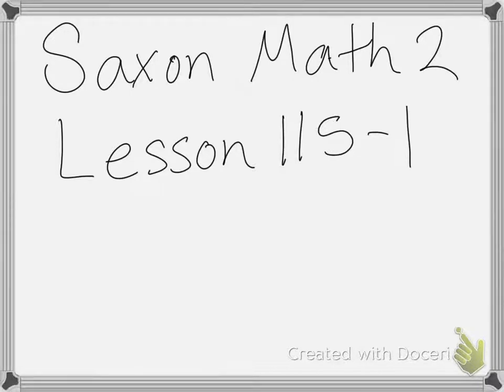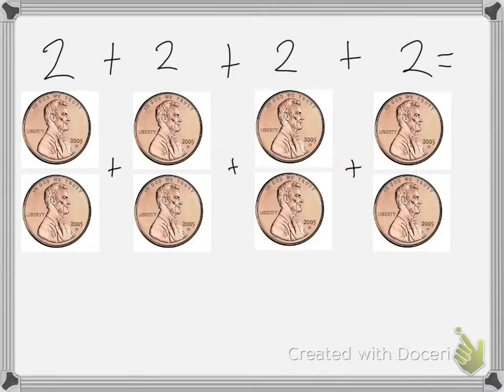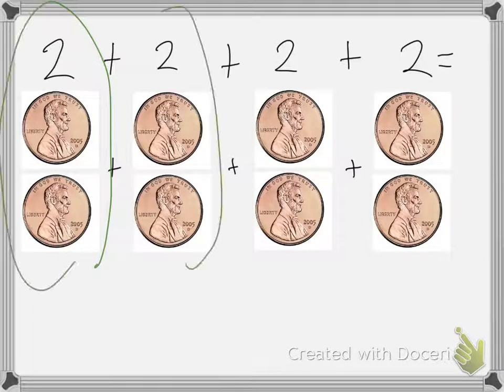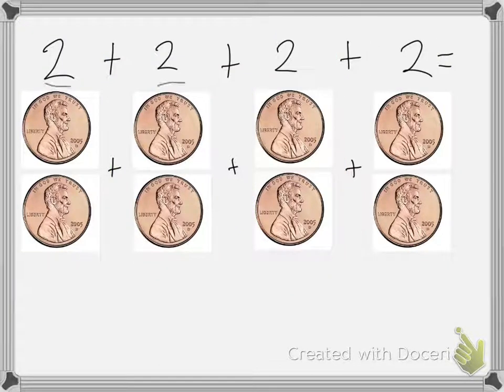Today you will learn how to multiply by 2. Here I have 4 groups of 2 pennies. You can see each of these groups has 2 pennies in them, and I have 4 of them. Normally I would do 2 plus 2 plus 2 plus 2. So I have a total of 8 pennies.